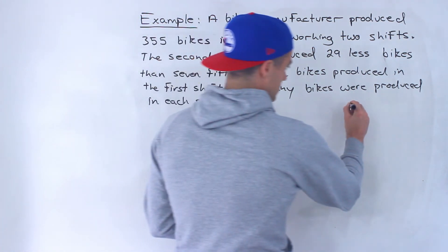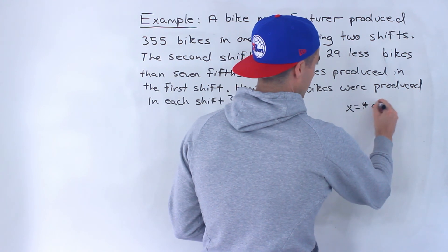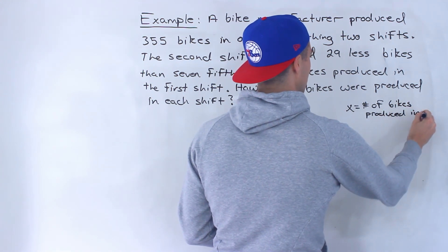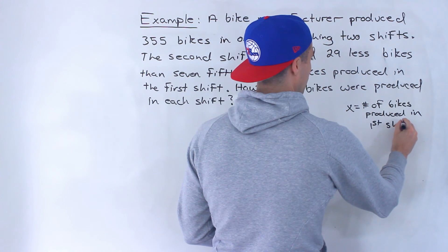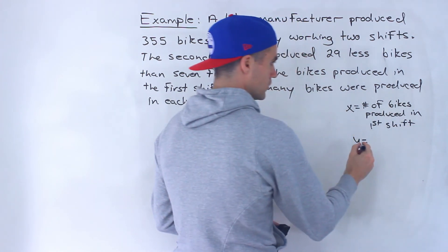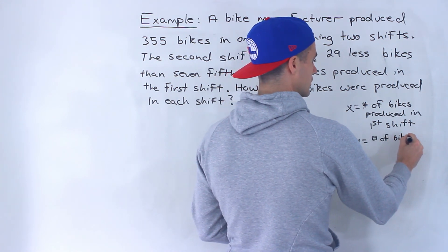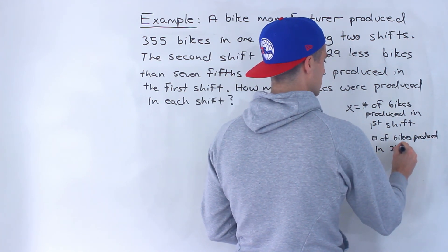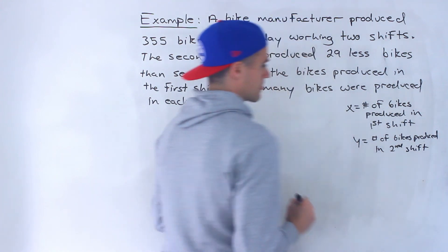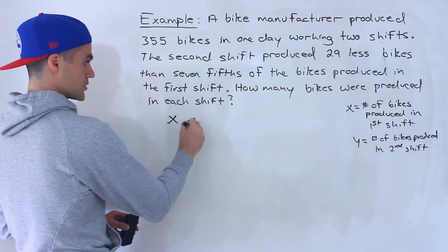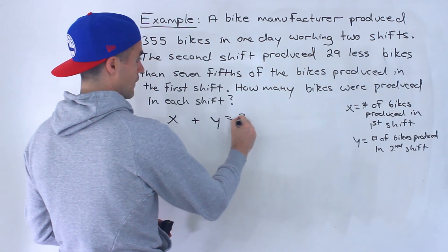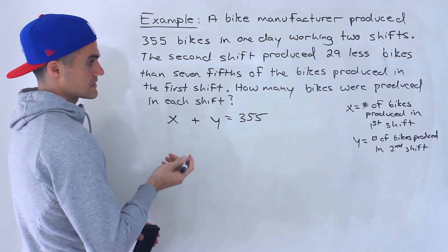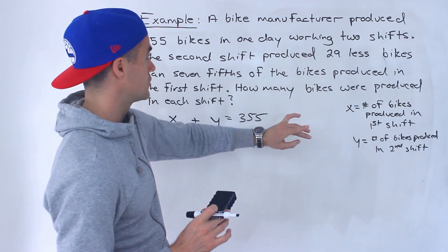What I'm going to do is introduce two variables. x would be the number of bikes produced in the first shift, and y would be the number of bikes produced in the second shift. We know the total of the bikes produced in each shift has to be 355 — there were only two shifts in the day. The next sentence shows us a relationship between the number of bikes produced in each shift.